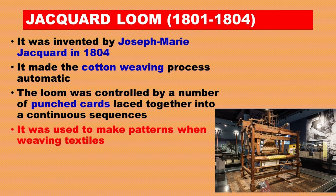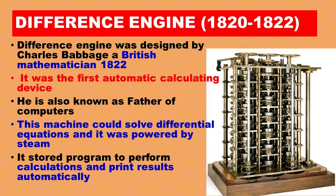Jacquard Loom, 1801–1804. It was invented by Joseph Marie Jacquard in 1804. It made the cotton weaving process automatic. The loom was controlled by a number of punched cards laced together into a continuous sequence. It was used to make patterns when weaving textiles.